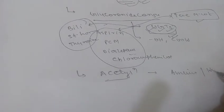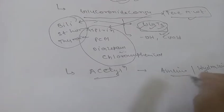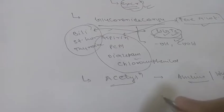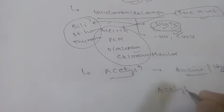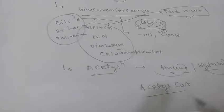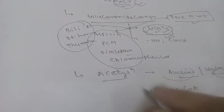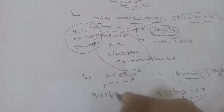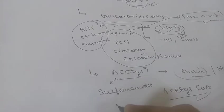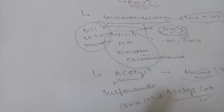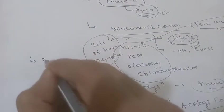The next phase 2 reaction is acetylation. Compounds having an amino group or hydrazine group are generally conjugated with the help of acetyl-CoA. Acetylation of these drugs occurs, and common drugs undergoing acetylation include sulfonamides and isoniazid.